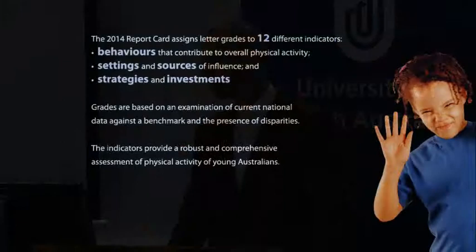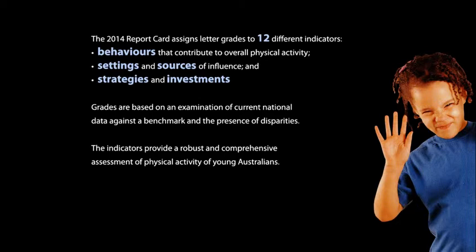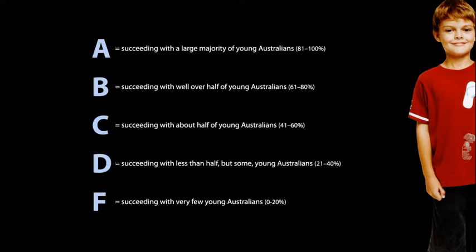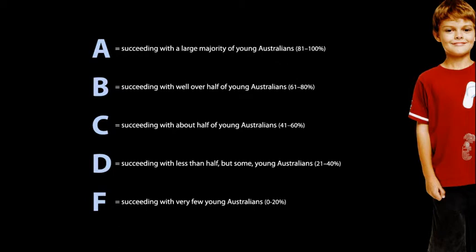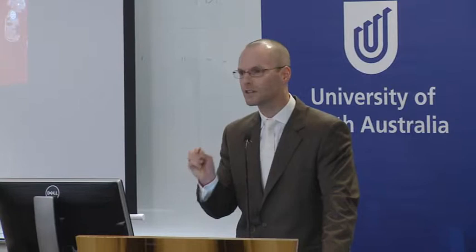The report card provides a robust and comprehensive assessment of the physical activity of young Australians. We assigned a grade of A if a large majority of young Australians are meeting or satisfying the benchmark, and a grade of F if very few are meeting it. To see how well Australia is doing, nine of the 12 indicators were compared to grades from 14 other countries around the world using the same standardised process, including countries from Oceania, the Americas, Europe and Africa.